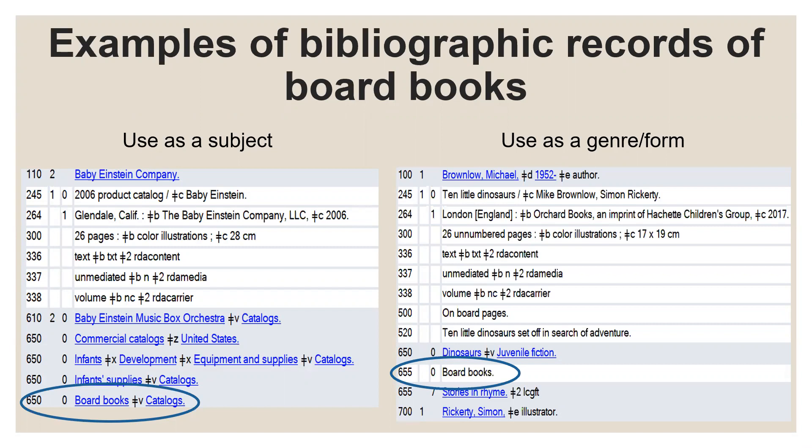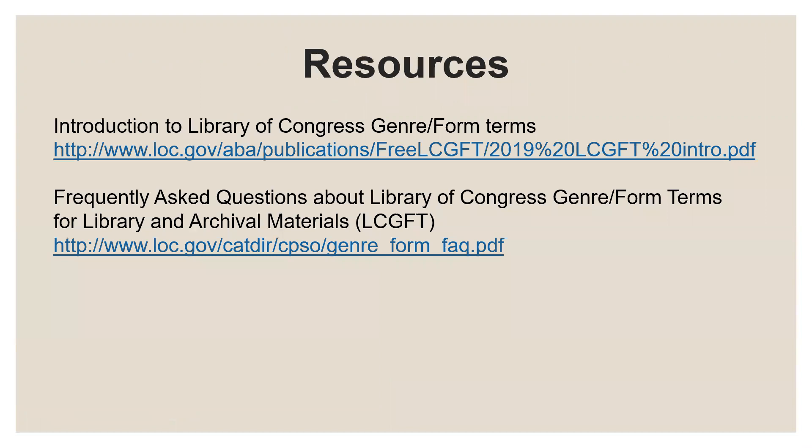Since the genre form heading is not in the LCGFT, GSAFD, or any other thesaurus, the second indicator is zero, which tells the cataloger the term is from the Library of Congress subject headings. This is a list of the source resources used in this presentation: the Introduction to Library of Congress Genre Form Terms and the Frequently Asked Questions about Library of Congress Genre Form Terms for Library and Archival Materials — both hyperlinked resources take you to the PDF.